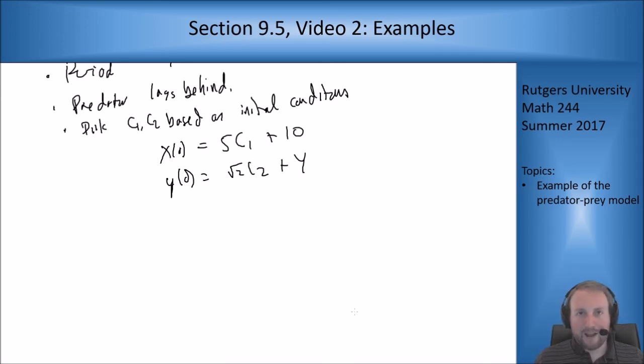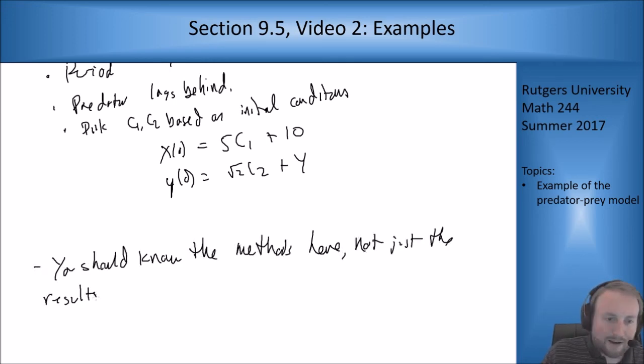While we have these direct formulas for the predator-prey model and the community species model, you should be able to do this for any non-linear system I gave you, assuming it's reasonable enough to handle. So you should know the methods here, not just the results. There's a decent chance that if you see something on an exam it's not going to be exactly one of these problems. So you should know how to get the results for a different system as opposed to just knowing that the results here are what they are.